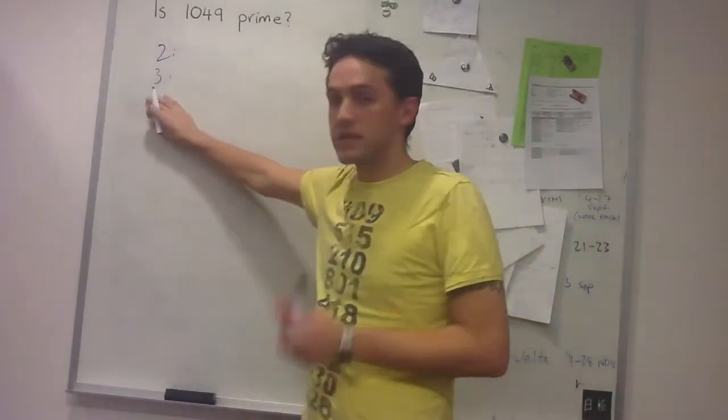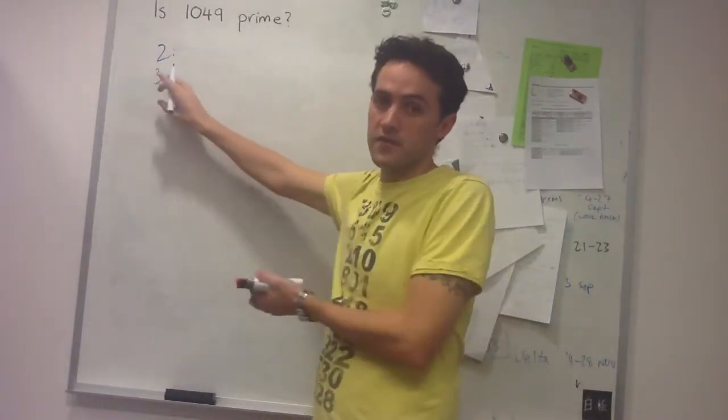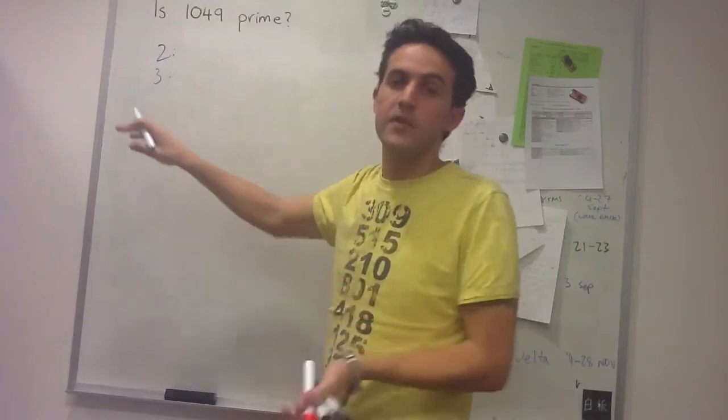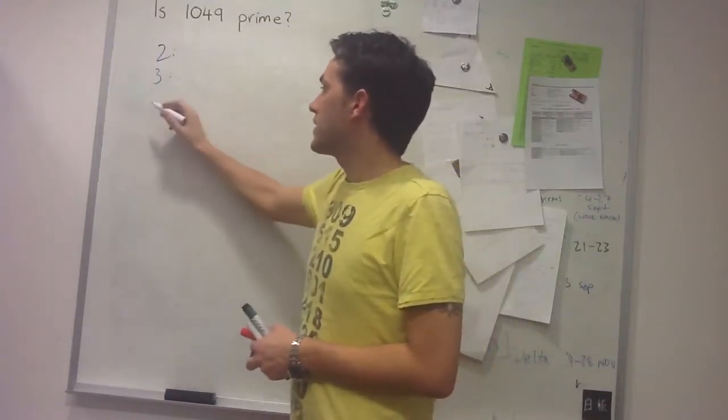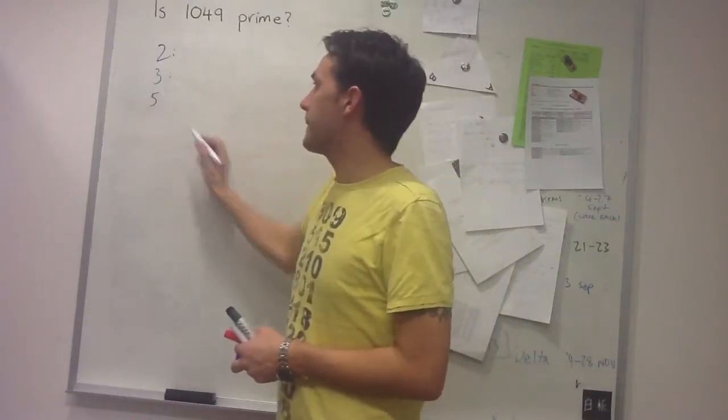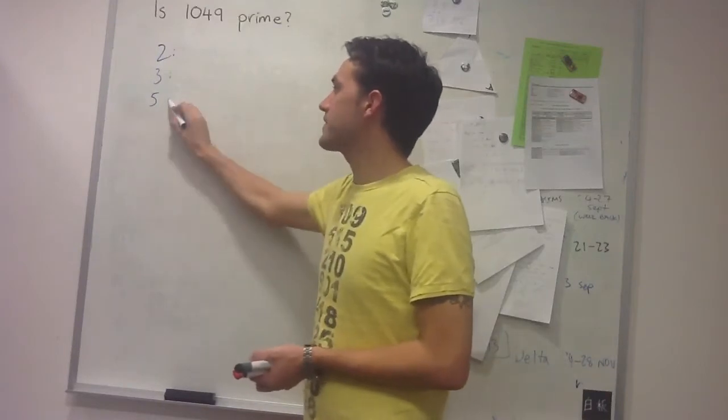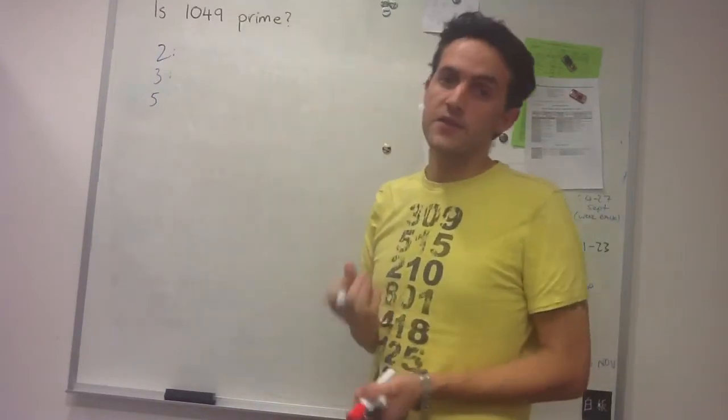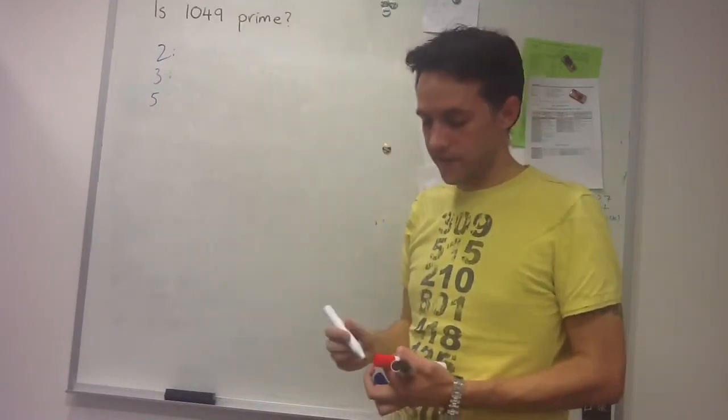Now I don't need to check 4 because it's not divisible by 2, so obviously it can't be divisible by any even number. So I just need to check the next prime, which in this case is 5, and clearly it's not divisible by 5 because it doesn't end in 5 or 0.